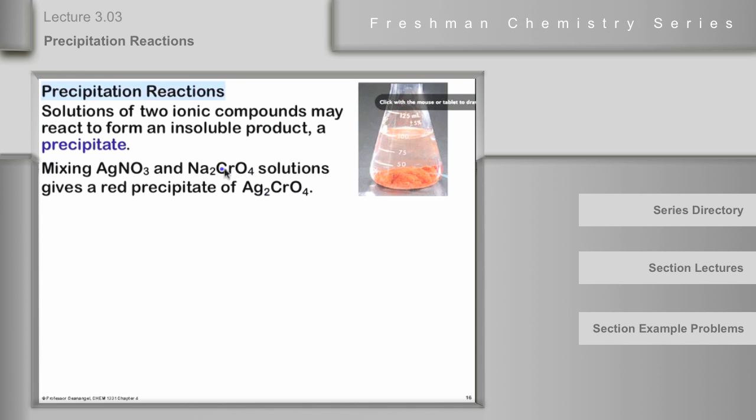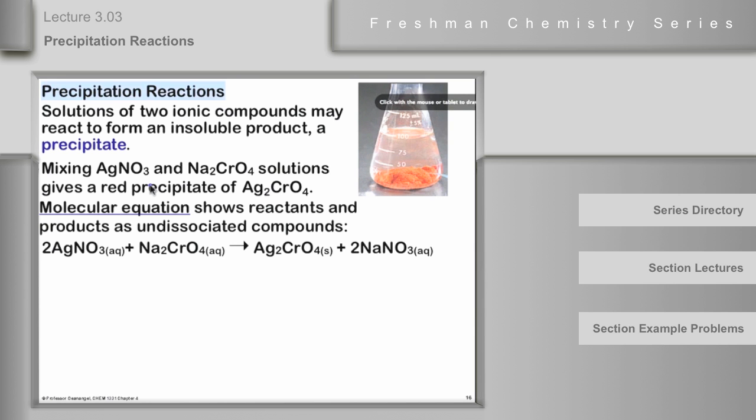If you remember, chromate ion has two negative charges. Silver ion has one positive charge. So the formula is going to be Ag2CrO4. And you can notice the solid here, and that is indicated in the molecular equation for that with this S. Some textbooks use a C right here for crystalline, but most of them use S nowadays for solid. And so we have two silver nitrates in aqueous solution plus sodium chromate in aqueous solution gives silver chromate solid, the red-orange stuff here, plus sodium nitrate aqueous. So this is a precipitation reaction.